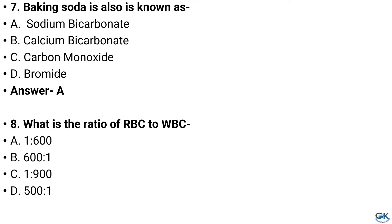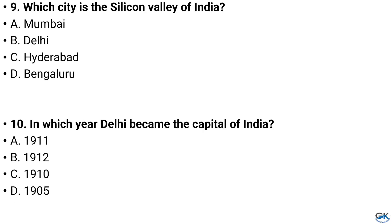Question number 8. What is the ratio of RBC to WBC? Option B: 600 is to 1, Option C: 1 is to 900, Option D: 500 is to 1. And the answer is Option B: 600 is to 1.